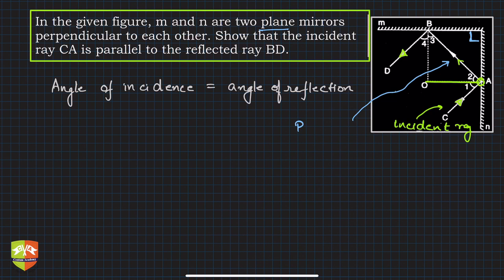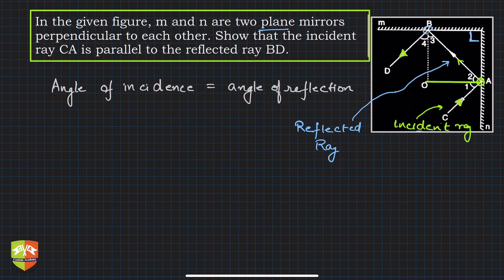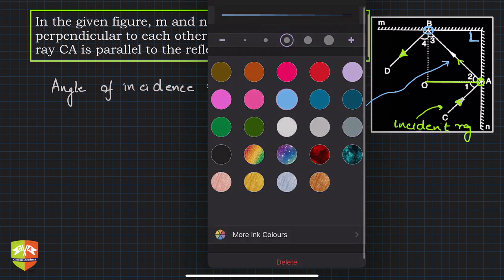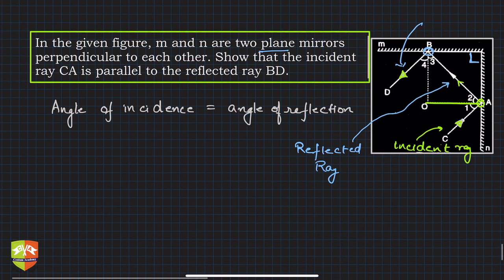This reflected ray goes on and is incident on the other mirror at point B, where it gets reflected again. This second reflected ray is what we see coming out after the second reflection — we have to prove that BD is parallel to CA.